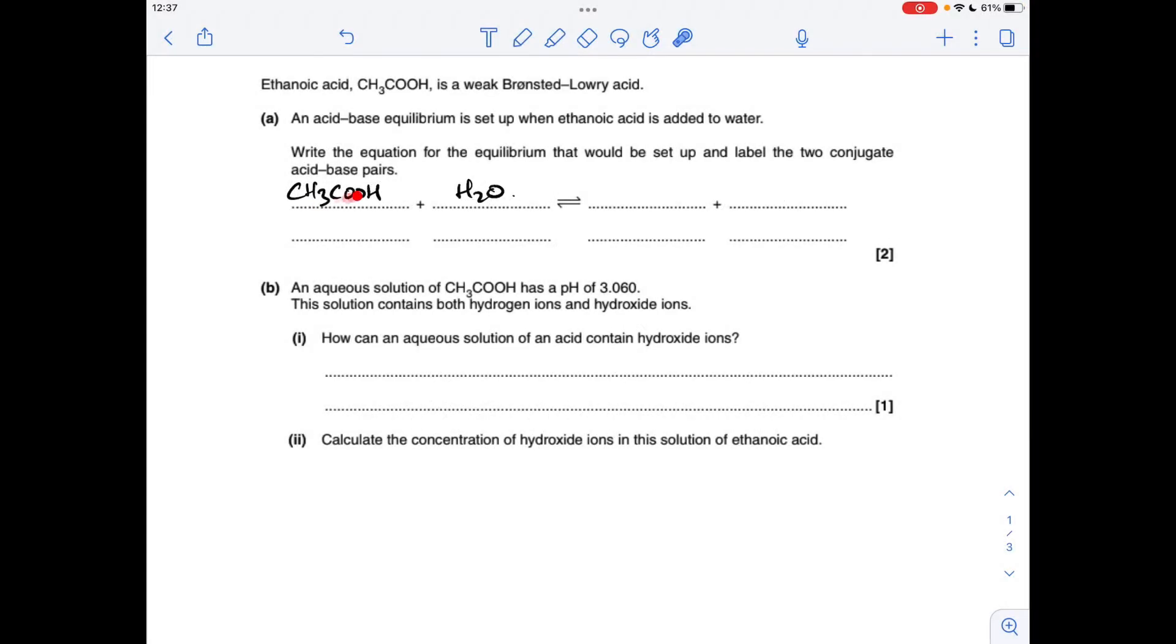Okay, so part A. The ethanoic acid and the water, how are they going to interact with each other? Well, the ethanoic acid will donate its proton to the H2O, which generates those two ions there. So we'll just label up the acid-base pairs now. So this yellow pair here, ethanoic acid is donating a proton to become that. Obviously that can accept a proton and go back to that. So we'll call this pair 1, acid 1, base 1.